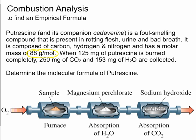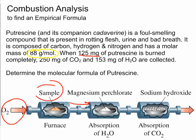A picture below shows you how this might work. Your sample — 125 milligrams of putrescine — is put into a furnace and oxygen gas is pumped in to burn that sample. There are two chambers that follow. As the sample burns, the vapor produced travels through. In the first chamber that follows the furnace, there's a compound like magnesium perchlorate that absorbs water.